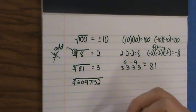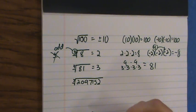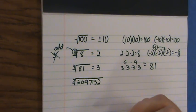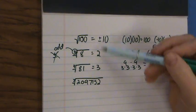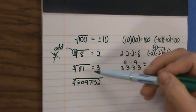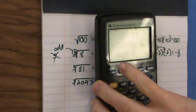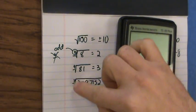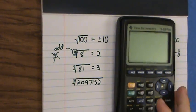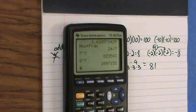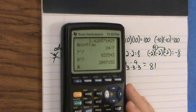The seventh root of two million ninety-seven thousand one hundred fifty-two — okay, so that seems really big. I'm going to show you on the calculator how we can find that. There are ways to use the radical symbol, but I'm going to use this opportunity to introduce rational exponents — that's fractional exponents.